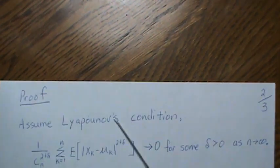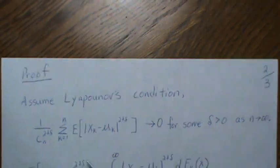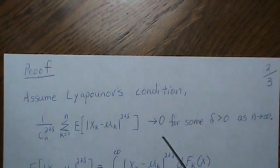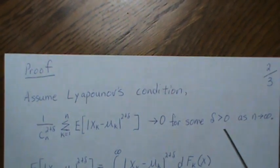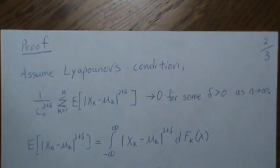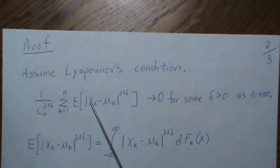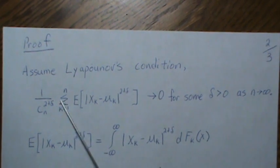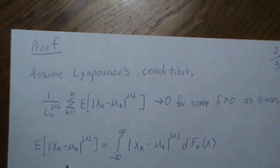Proof: Let's first assume Lyapunov's condition, so that's that this quantity converges to zero for some delta greater than zero, and of course n goes to infinity.